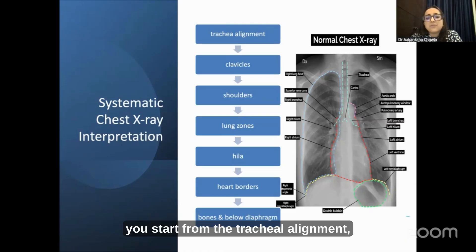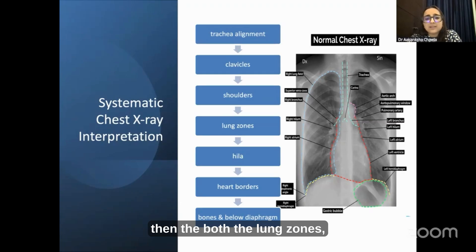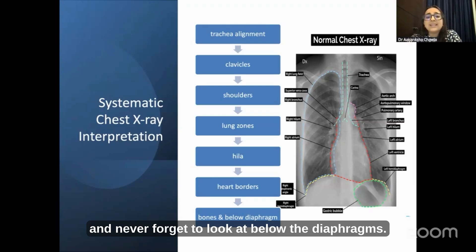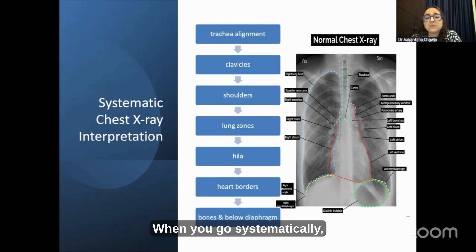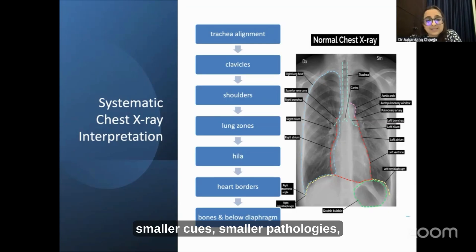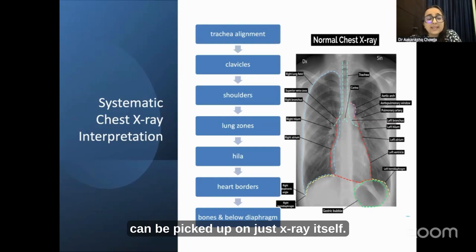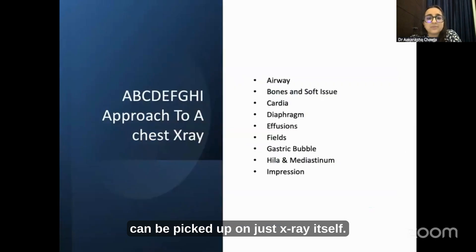For example, start from the tracheal alignment, look at your clavicles, then the shoulders, then both lung zones, the hilar, the heart borders, bones, and never forget to look below the diaphragm. When you go systematically, you tend not to miss smaller cues, smaller pathologies, or something which is hidden and can be picked up on the X-ray itself.